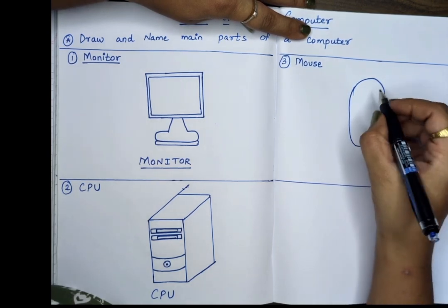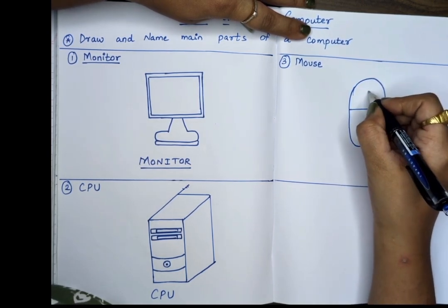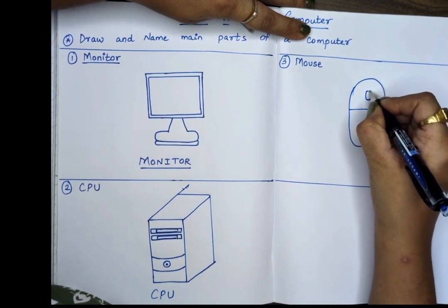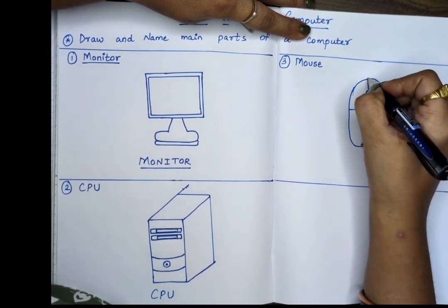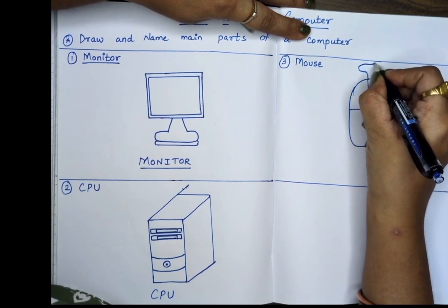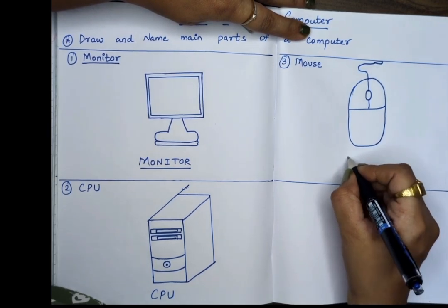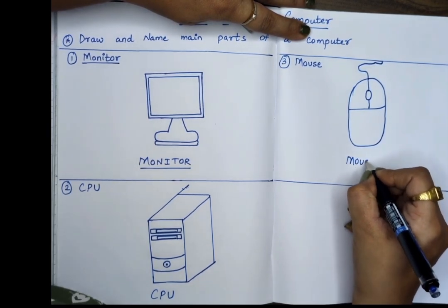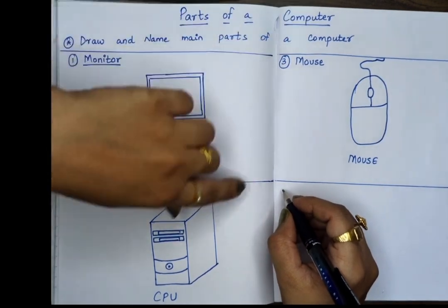This is the mouse, small and neat. Two little buttons and a wire at its seat. Click and point, move it around. The mouse makes magic on the ground. Yes. So this is mouse.